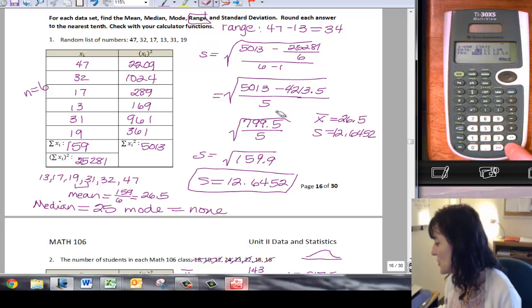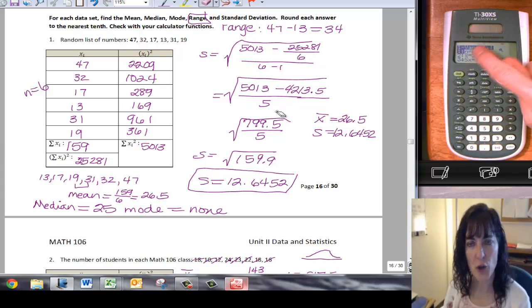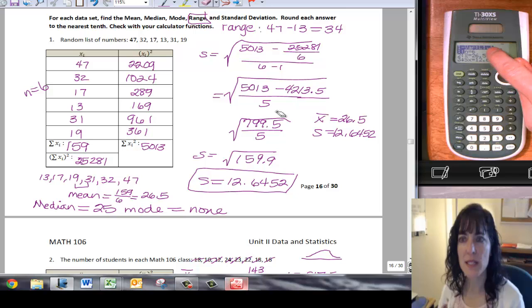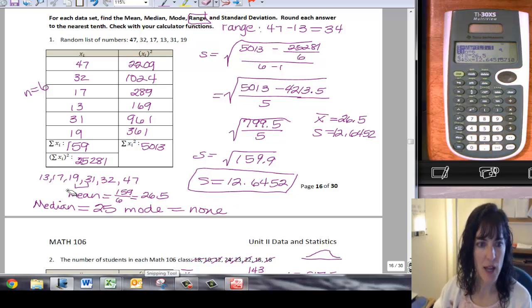And I can just move down to calculate at the bottom right there and push enter. And then it's going to show me one variable statistics using list one one time only. And my n was six, that's good. My x bar is 26.5.